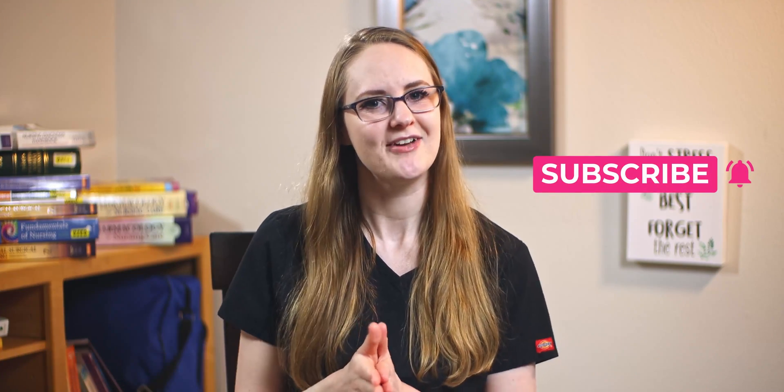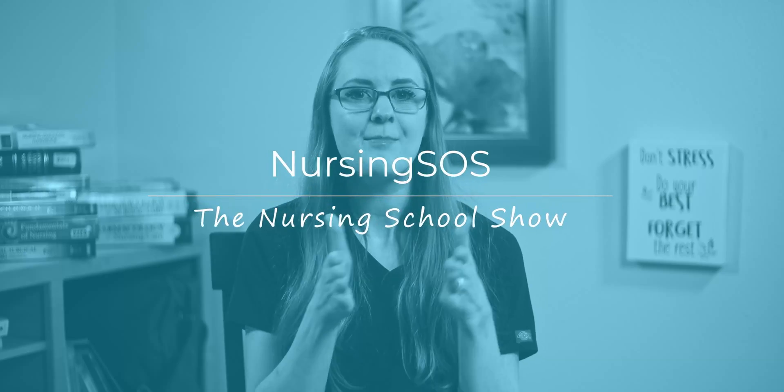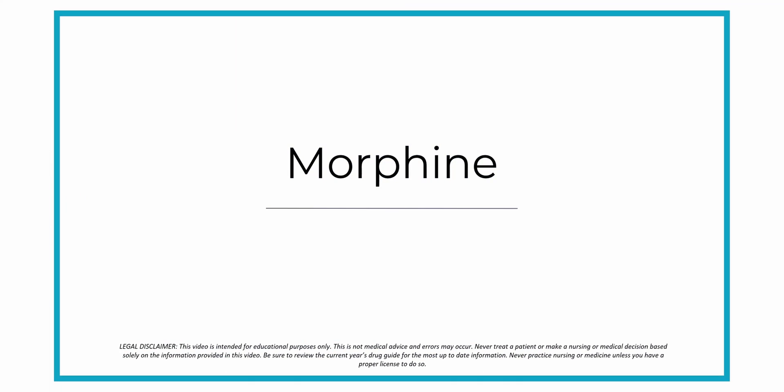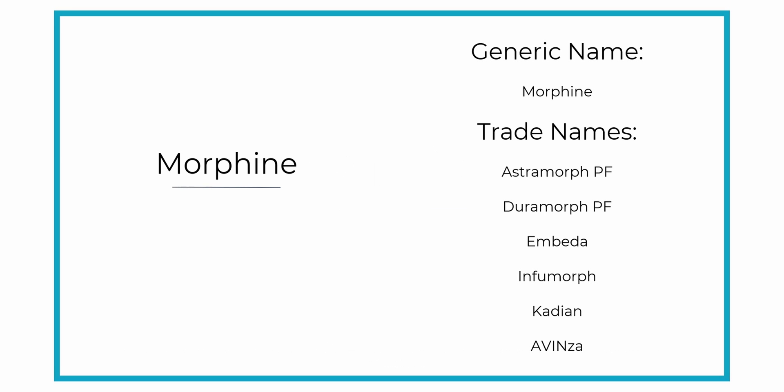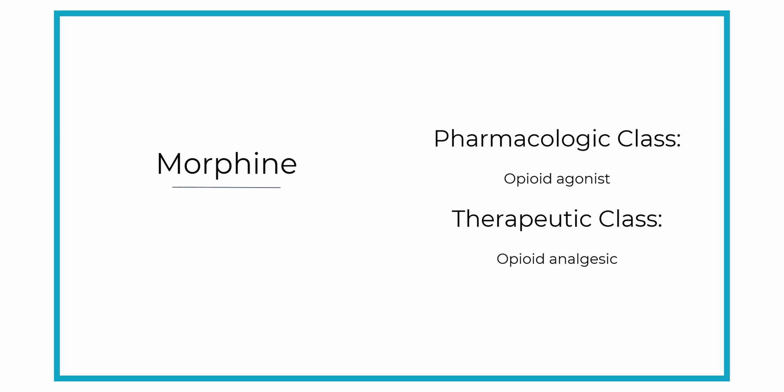Let's get started with morphine. The generic name is morphine and the trade names are Astromorph PF, Theromorph PF, Embedda, Infumorph, KDN, and Avenza. The pharmacologic class of morphine is an opioid agonist and the therapeutic class is an opioid analgesic.